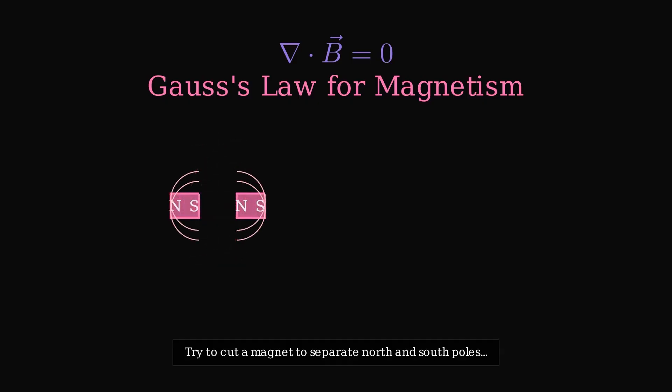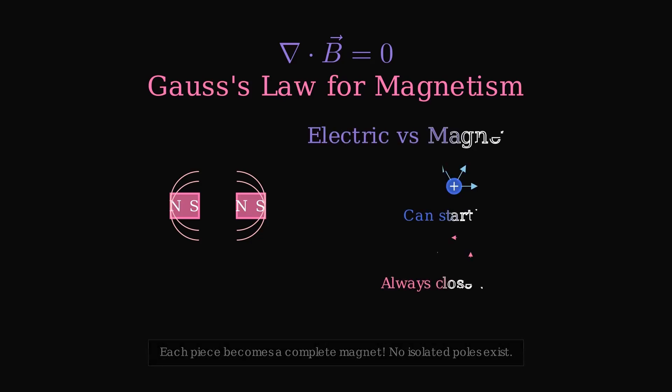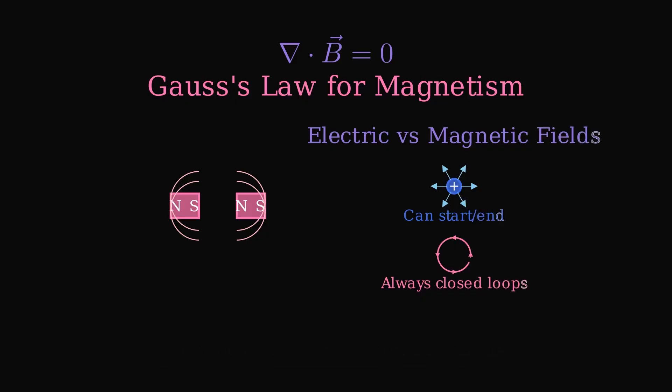No isolated magnetic poles exist in nature. Unlike electric fields that can start and end at charges, magnetic field lines always form continuous closed loops. This fundamental difference between electricity and magnetism has profound implications for how they behave.